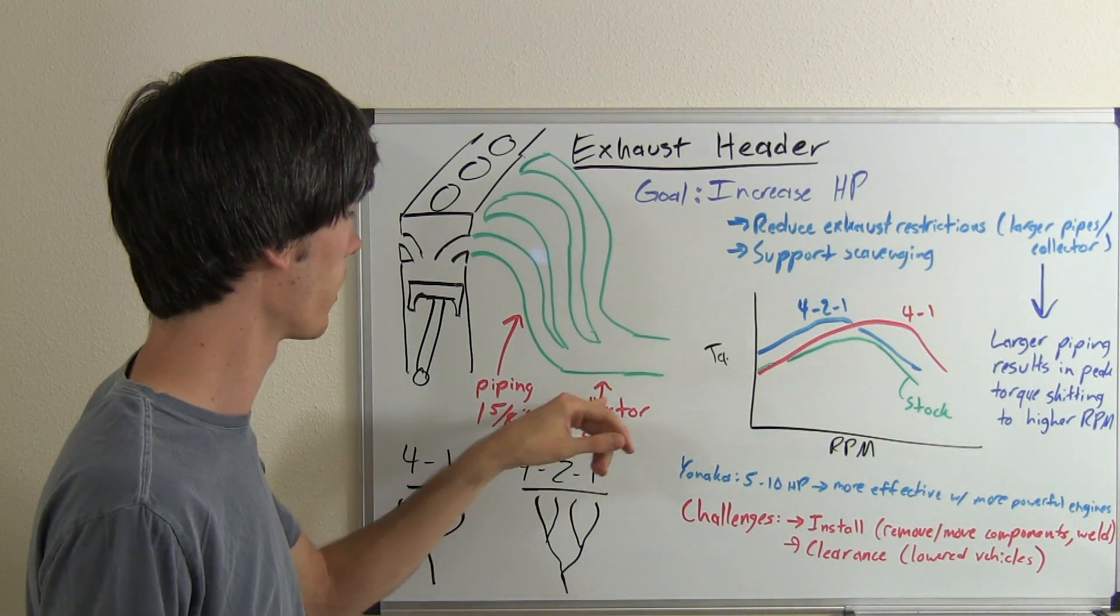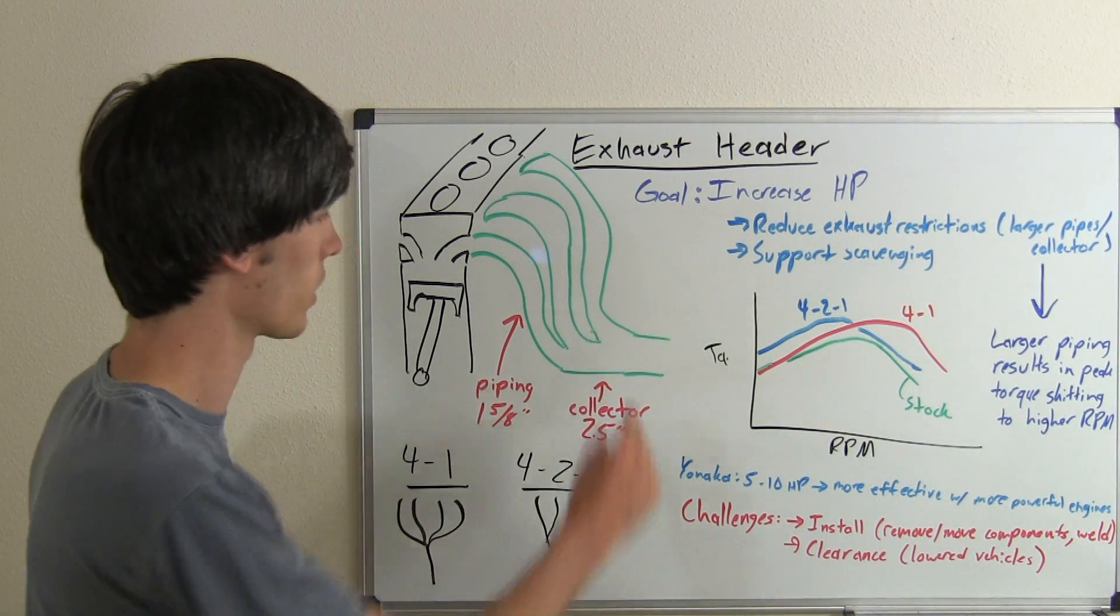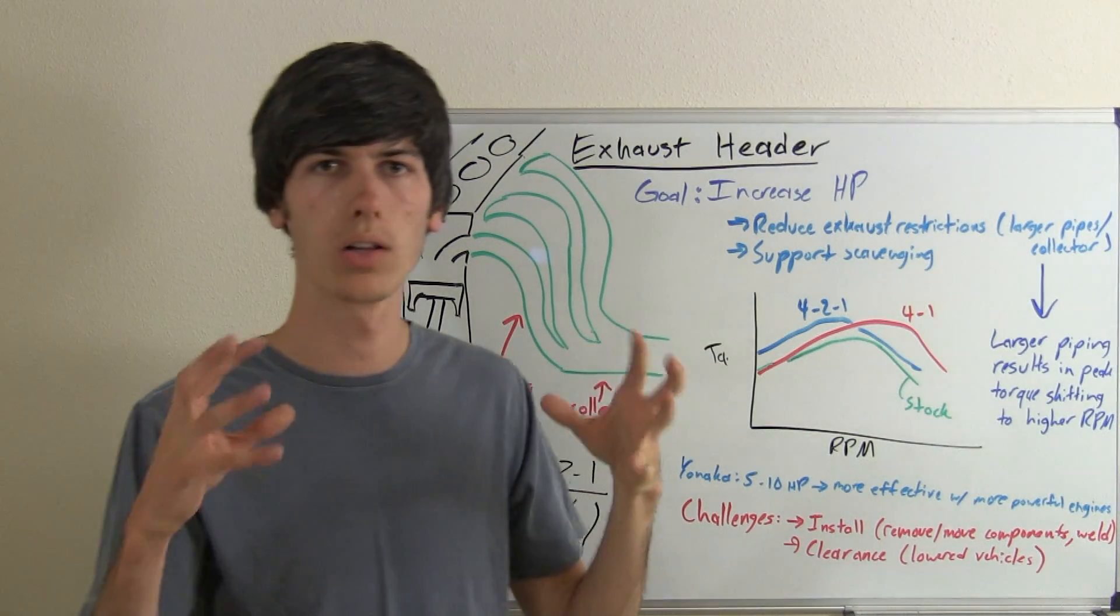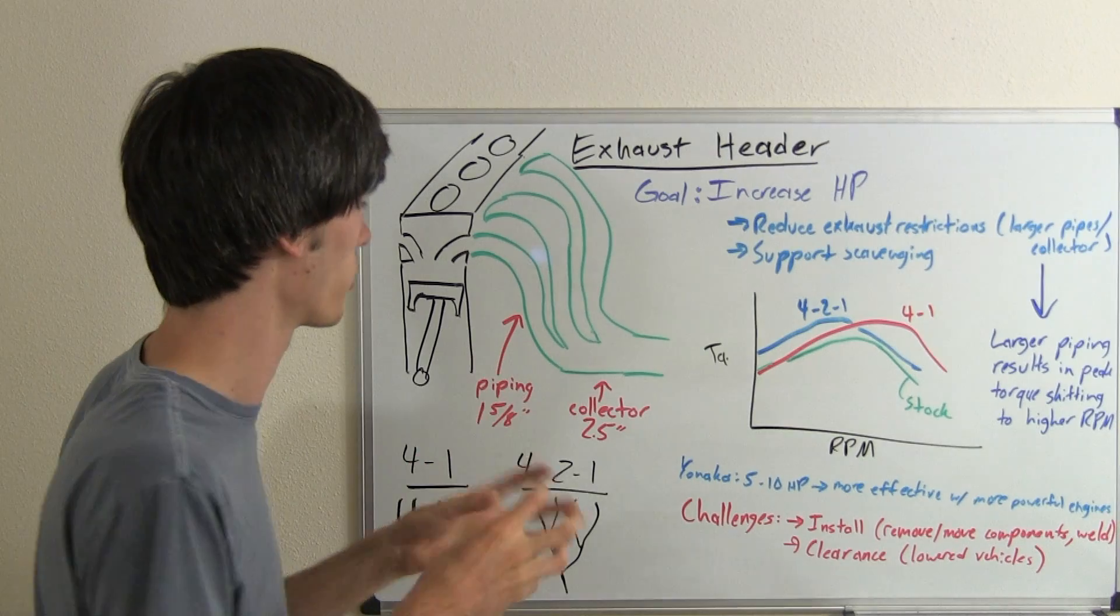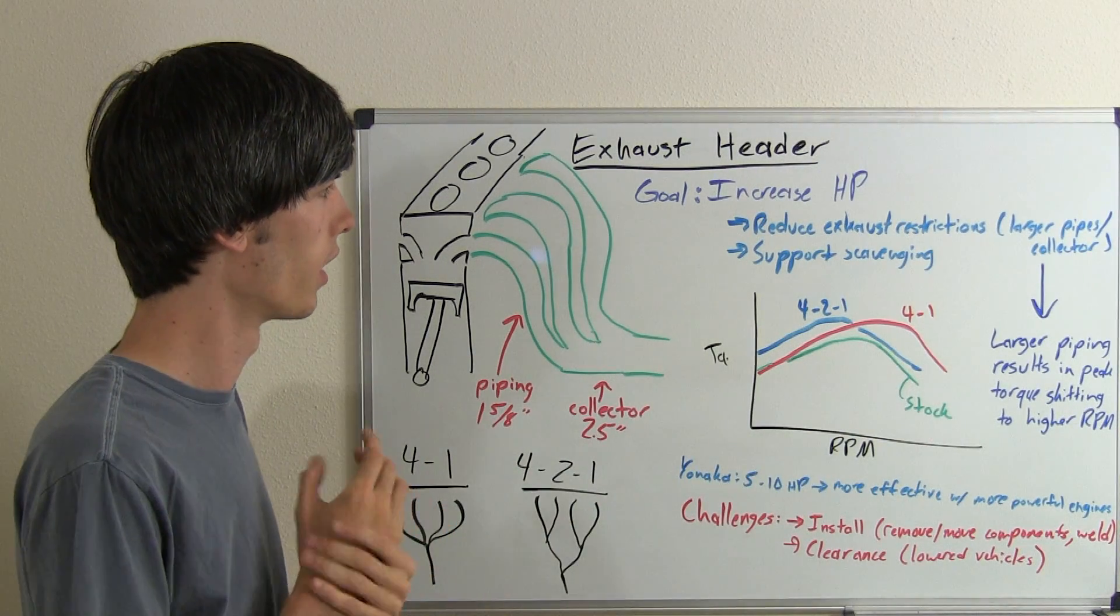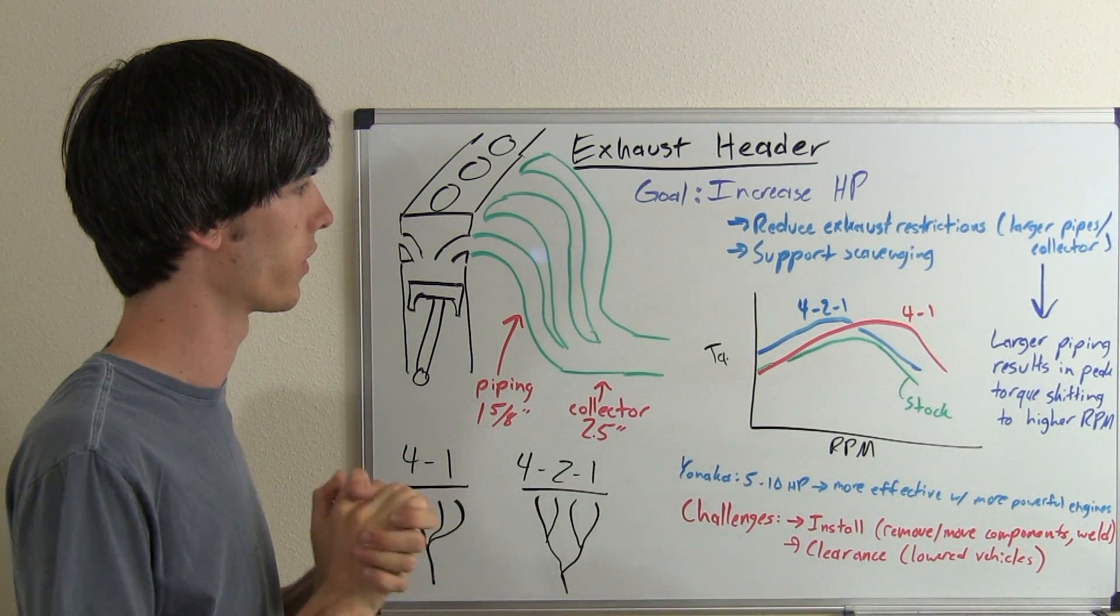It also has a 2.5 inch collector. The collector is where all of the individual pipes join together and then go out to the exhaust as one throughout the rest of the system.